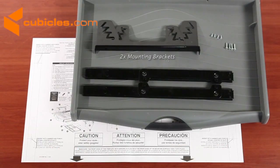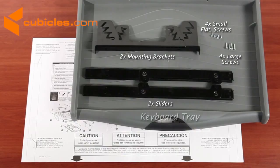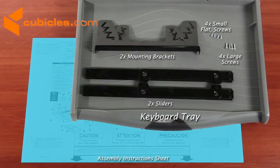For this assembly you will need your two mounting brackets, two sliders, four small flat screws, four larger screws, the keyboard tray, and the paper assembly instructions sheet. All of this is included in the product box.